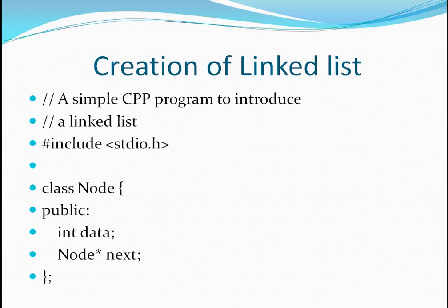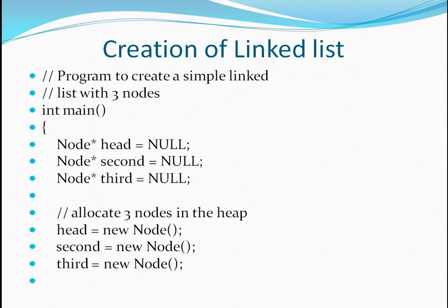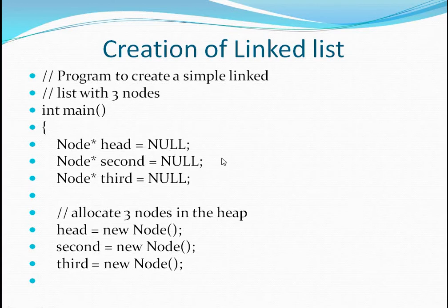One node of a linked list can be defined with the help of a class. I have taken a class named 'node' and it has two fields: one is integer data, and the other is 'node* next', which is the pointer to the next node. I have defined three nodes — the first node is called head, the second is called second, and the third is called third — and the pointer fields of all three are kept as null since we are creating separate nodes.